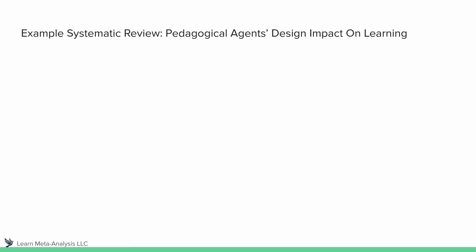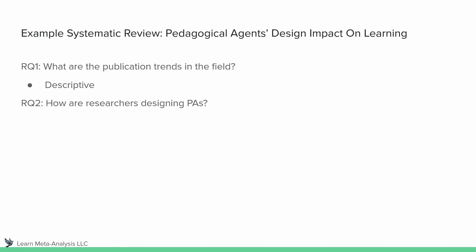Let's take a look at an example — the one we've been working with throughout the systematic review videos — examining how a pedagogical agent, a virtual character, and their design can impact learning. Our first research question might be: what are the publication trends in the field? Here we'd use a descriptive analysis, talking about the number of publications over time or where these publications appear — journals, book chapters, conferences, etc. A second research question might be: how are researchers designing pedagogical agents? This is also likely descriptive — for example, 60% of studies used characters designed to play one role, whereas 30% were designed for another.